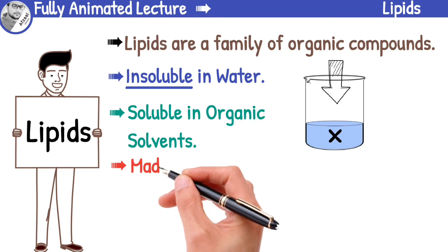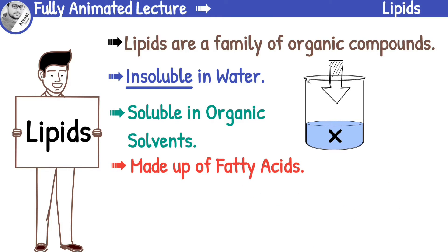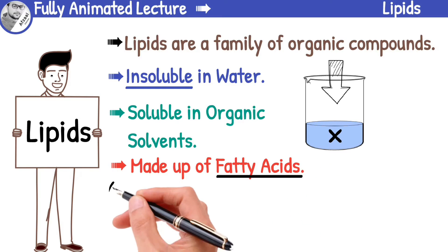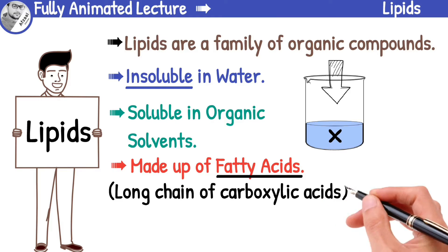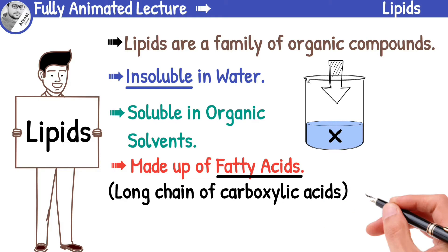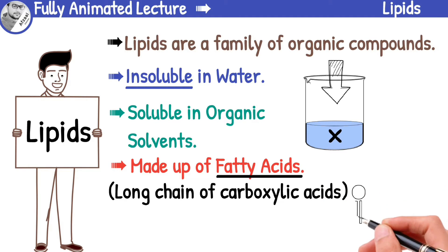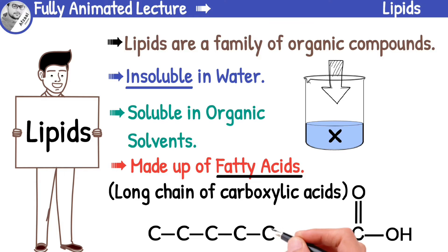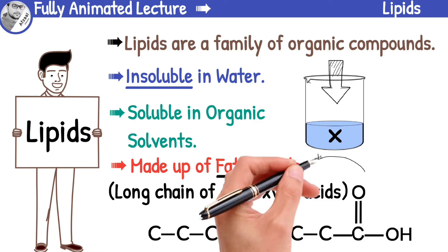Lipids are made up of fatty acids. What are fatty acids? They are long chains of carboxylic acids. Carboxylic acids are organic compounds that have a carboxyl group at the end of their molecular chain. When these carboxylic acids bond together in a long chain, they form what we call a fatty acid.